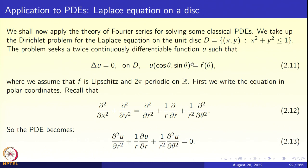The problem is to find a twice continuously differentiable function u such that Δu = 0 on the disk and u(cos θ, sin θ) = f(θ), where f is a 2π-periodic function. We assume f is Lipschitz and 2π-periodic so that the Fourier series converges pointwise. First, we write Laplace's equation in polar coordinates: ∂²u/∂x² + ∂²u/∂y² = ∂²u/∂r² + (1/r)∂u/∂r + (1/r²)∂²u/∂θ², which is equation 2.13.